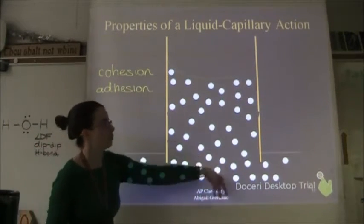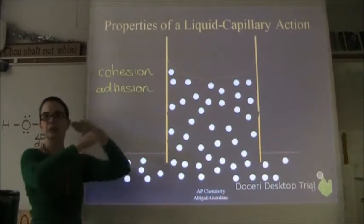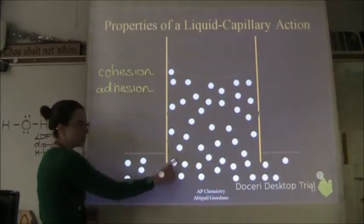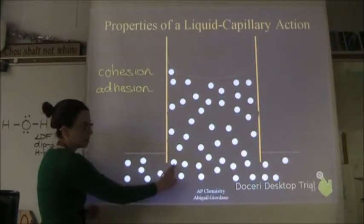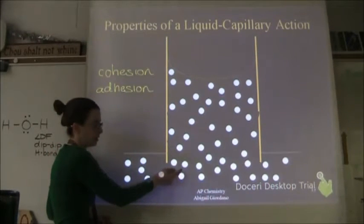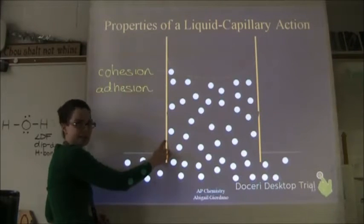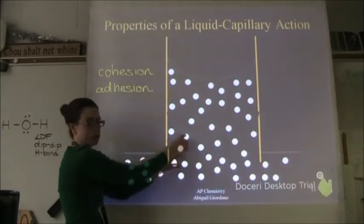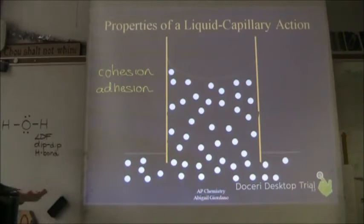If you watched blood travel up the capillary tube in super slow motion, you'd see an alternation between adhesion and cohesion. A water molecule sticks to the glass through dipole-dipole attraction — adhesion — then pulls its neighboring water molecules along through cohesion. Those molecules then stick to the glass — adhesion again — and pull their neighbors — cohesion. It crawls up the tube: adhesion, cohesion, adhesion, cohesion. It's a totally spontaneous process.